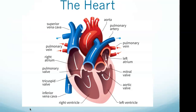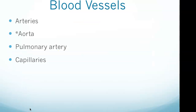The largest artery is the aorta, and it carries blood away from your heart into the rest of your body — that answers question one. The pulmonary artery carries deoxygenated blood from the right ventricle to the lungs, not to the heart. Oxygenated blood leaves the heart via the aorta and travels through a network of arterioles to arrive at the capillary beds.